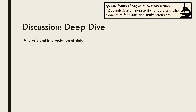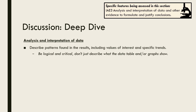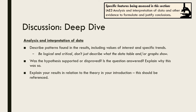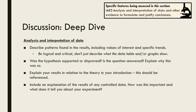In the analysis and interpretation part of the discussion, you need to describe patterns found in the results. This should include specific values of interest and specific trends in the data. It is really important to be logical and critical here rather than just describing what the data table and graphs show. Make sure your conclusions are clearly justified based on the data you have collected. After describing your data, you need to link it to the hypothesis — was it supported or disproved, and therefore was the question answered? Explain why this was so. The next part is to explain your results in relation to the biological background in your introduction, using this information to interpret what your results mean on a biological level — you will need to use references here. Lastly, include an explanation of the results of any controlled data and what it tells you about your experiment.